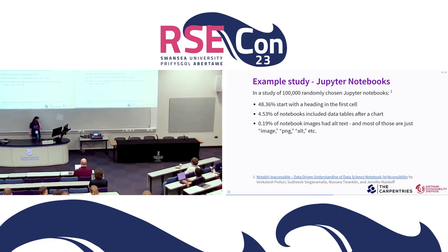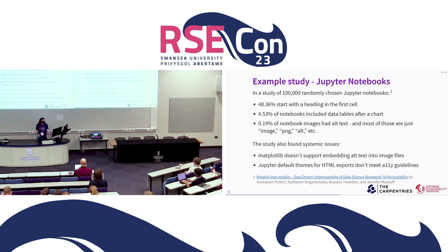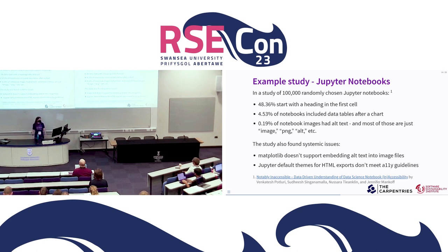The worst statistic I found was that of all the images in these 100,000 notebooks, only 0.19% of them had alt text. Alternative text is a text description you can attach to images. And where images did have alt text, most were just 'image' or 'PNG' or 'alt,' which doesn't give any indication of what's actually in the image — so the amount of useful alt text is even smaller. This study also found systemic issues: matplotlib doesn't support embedding alt text into image files, so you have to do it at the point where you're including an image in Markdown rather than through the matplotlib Python interface. Also, the Jupyter default themes when exporting to HTML don't meet accessibility guidelines — they end up with contrast issues. So there's work to do at every level.